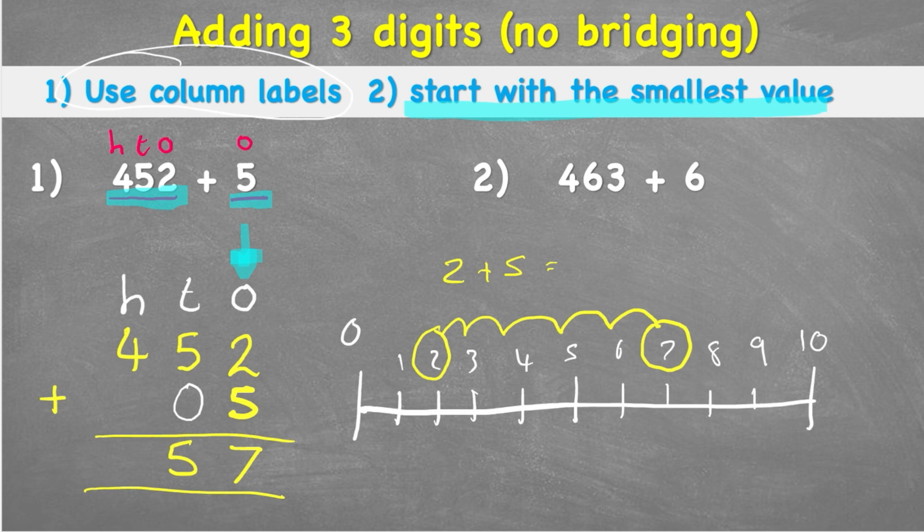And same thing for the next one. My 100s column, I have a 4 and nothing. So I could put the placeholder 0. 4 add 0 is of course 4. Therefore, my answer to 452 plus 5 equals 457.